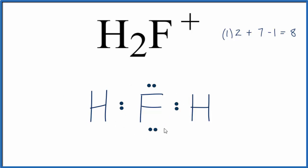But the fluorine, that has eight. And then each of the hydrogens, they only need two. So this is the Lewis structure.